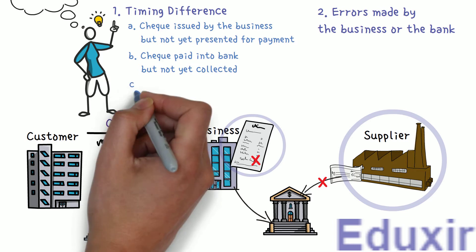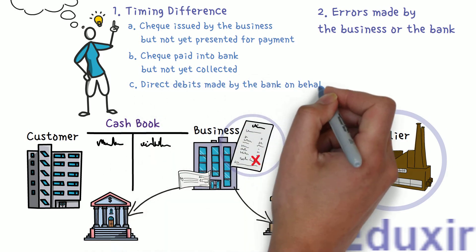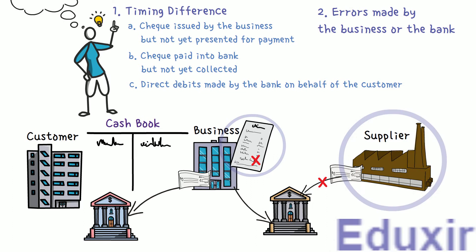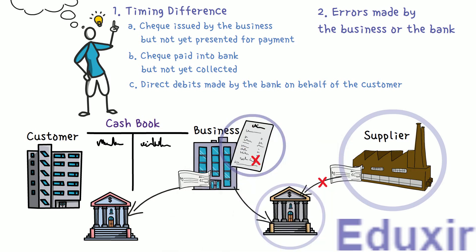The next reason is direct debits made by the bank on behalf of the customer. Sometimes the bank deducts amounts for various services and the business may not be aware of these deductions. So these deductions, which fall under expenses, may not have been recorded in the cashbook. For example, bank charges on a current account might have been deducted by the bank, but the business knows about these deductions only after the bank statement is received.